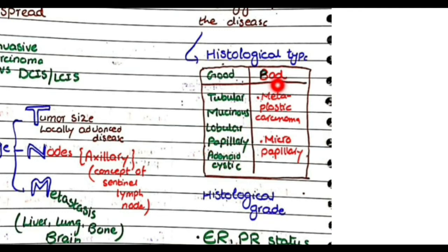And remember those histological types that have bad prognosis: metaplastic carcinoma and micropapillary. So just remember the names of these tumors which have a bad prognosis - metaplastic and micropapillary.